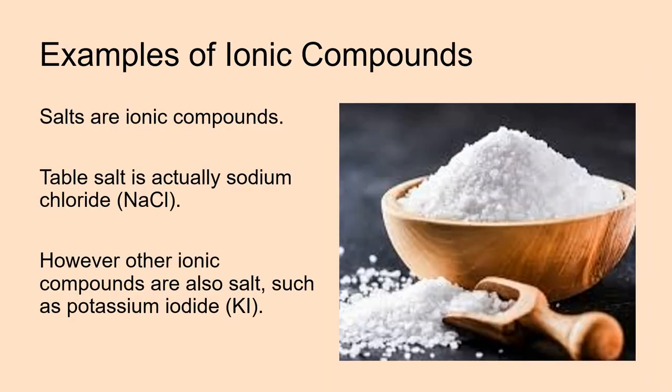Some examples of ionic compounds. Salt. Salt is our most common ionic compound that we use in our everyday lives, because table salt that we put on our chips and have in our crisps is actually sodium chloride. So, it's an ion of sodium that has an electrostatic attraction to an ion of chloride, or a chloride ion, which is Cl-. There are other ionic compounds that are also salts, because a salt is just a metal and non-metal bonded together. So, we also have potassium iodide, which you may have seen in the lab.